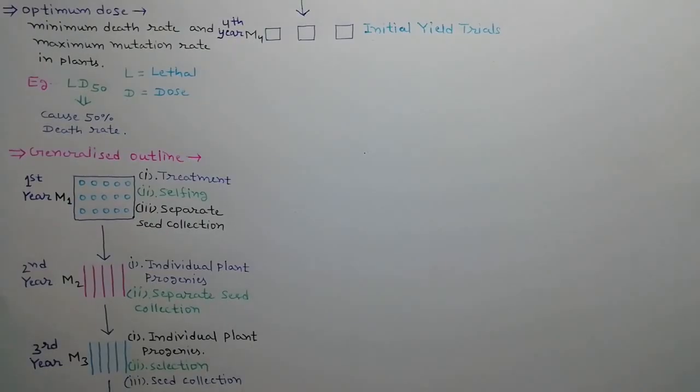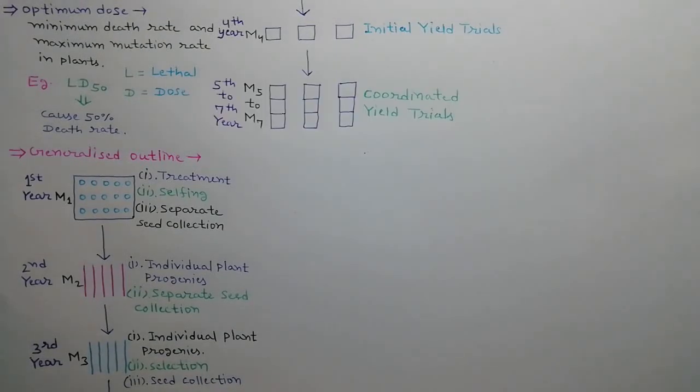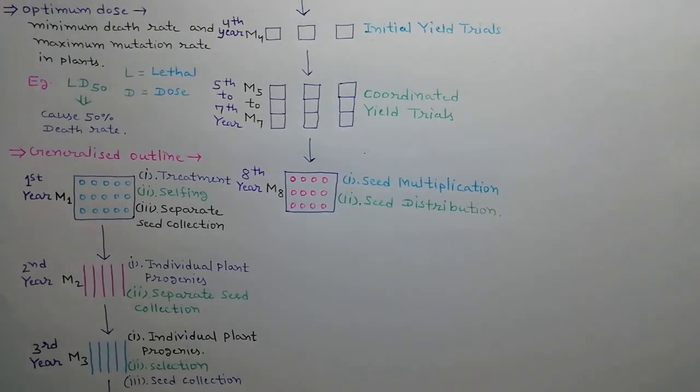In the fourth year, initial yield trials are performed. From fifth to seventh year, coordinated yield trials are performed. In the eighth year, seeds are multiplied and distributed to farmers.